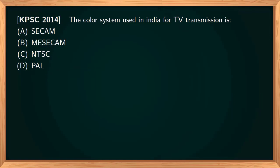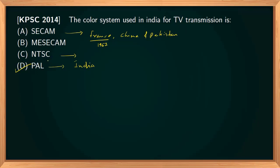The color system used in India for television transmission — options are SECAM, NTSC, and PAL. The correct option is PAL, which stands for Phase Alternation Line. SECAM is used in France, China, Pakistan, and some European countries, developed by France in 1967. NTSC stands for National Television System Committee and is used in North America. PAL was developed by Germany and is used in India.